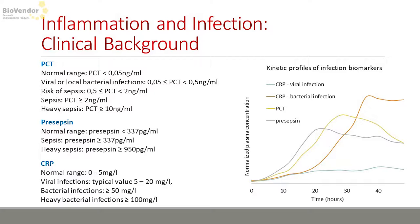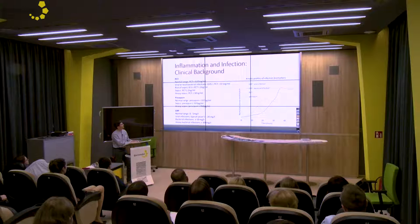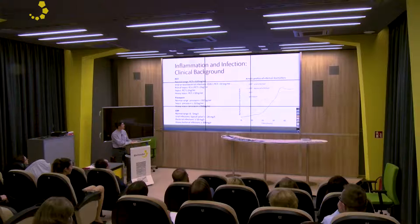On this picture you can see kinetic profiles for all those mentioned parameters. From this graph it's clear that the earliest marker released under bacterial infection is presepsin. This gray line belongs to CRP level in patients with viral infection, and this red-orange line is the typical CRP value in patients with bacterial infection. For CRP values over 50 milligram per liter, you can say this patient has a bacterial infection and can prescribe antibiotics.